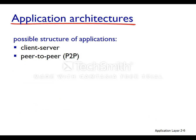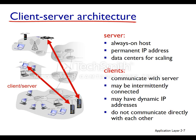Network applications can be structured using either a client-server approach or a peer-to-peer approach. In the client-server approach, you have a server that is a host that's always on, and typically it has a permanent IP address. These days we keep these servers in data centers so we can scale more efficiently. Clients are end hosts that communicate with servers; they can come and go, are intermittently connected, and potentially have dynamic IP addresses. In the client-server approach, clients do not communicate directly with each other.